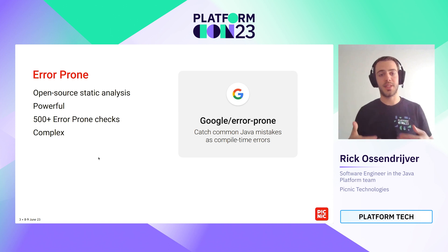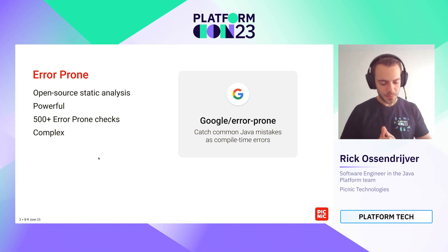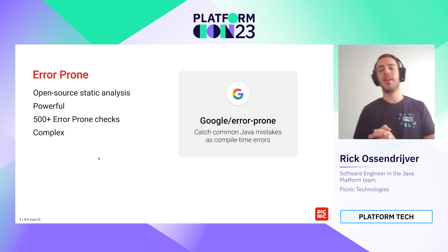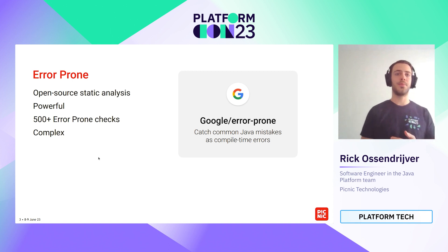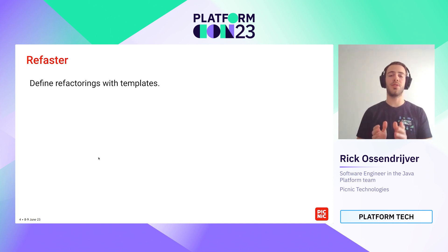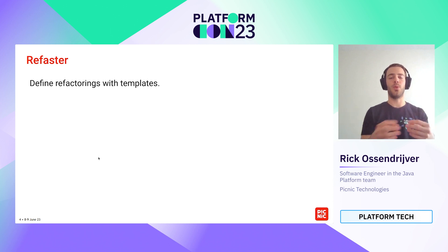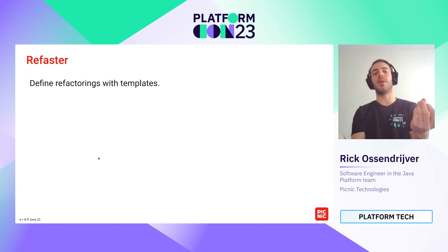And that concept itself is a really powerful thing. Out of the box, Google provides over 500 Error Prone checks. But there is one downside — writing a check on your own can be quite complex. The folks at Google thought about this and created another tool on top of Error Prone called Refaster. Refaster is a templating DSL that you can use to specify refactorings using templates. You have before and after templates: in the before template you specify what code you want to match, and in the after template you specify what code you want to rewrite it to.